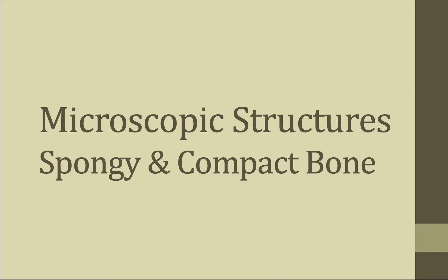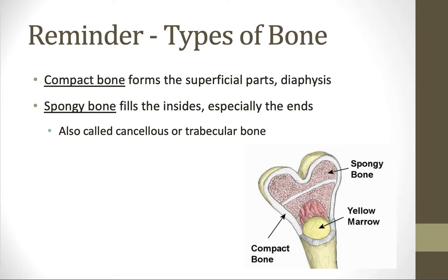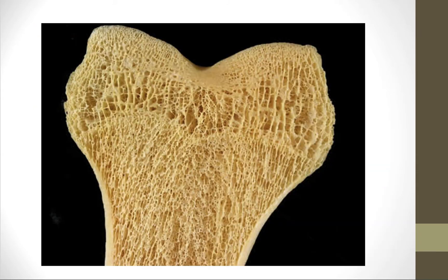This screencast will talk about the microscopic structures of both compact and spongy bone. As a reminder, you have two types of bone. Compact bone, which is more compact, forms the superficial parts of the bone as well as the diaphysis. Spongy bone fills the insides of the bone, especially the ends, and is also called cancellous or trabecular bone.